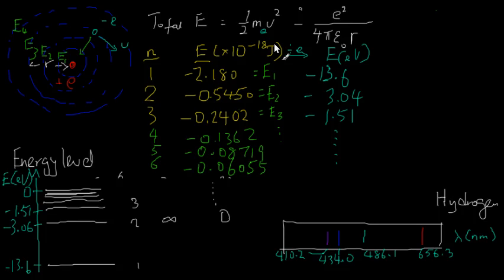In the last video, I've shown how to calculate the energy of each orbit by adding up the kinetic and potential energy of an electron in each orbit. And these were the values that I got.